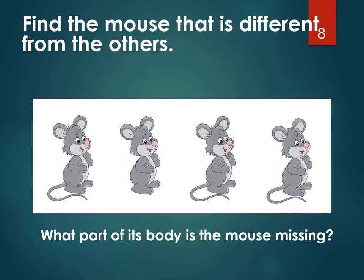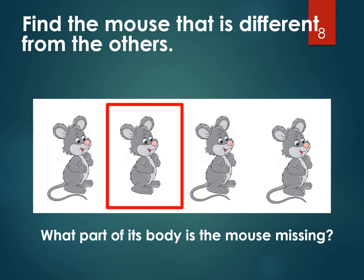We have a beautiful set of cute mice. Can you find a mouse that's different from the others? Did you point to this one? Then you are correct. And what is that mouse missing? He's missing his tail. That's a funny mouse. Let's move along.